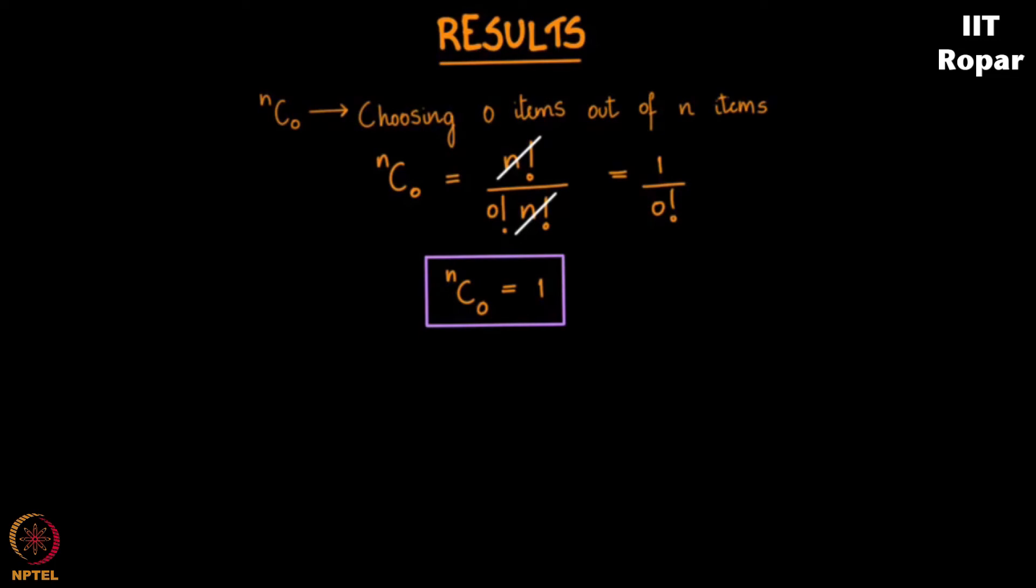The statement 'choosing 0 objects from n objects' might be a little weird, but whenever we encounter nC0, we generally write it as 1.